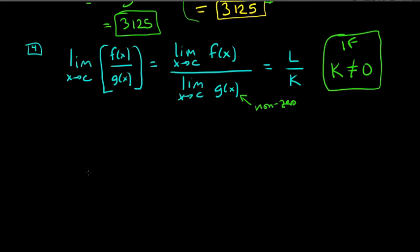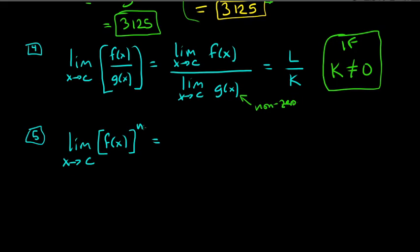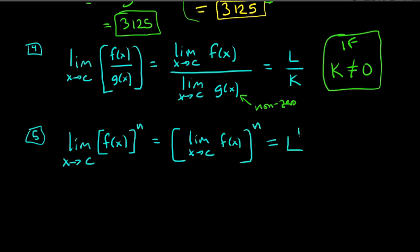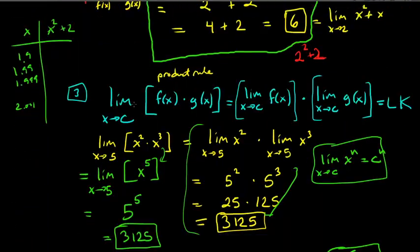Part five: the limit as x approaches c of [f(x)]^n equals the limit of f(x), all raised to the nth power — that is, l^n. So these are the five parts of Theorem 1.2. There are also Theorem 1.3 properties that nicely summarize everything.